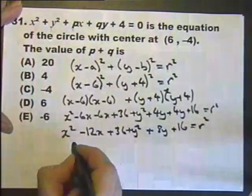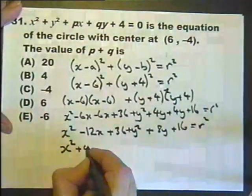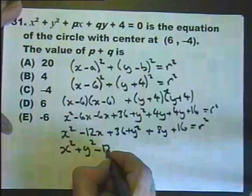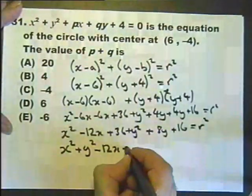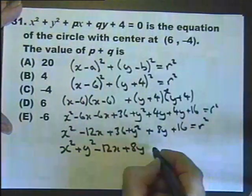x squared plus y squared. So we'll write this in the same order. x squared plus y squared. Now we've got px, so we'll have minus 12x. And then 8y. 36 and 16 is 42.